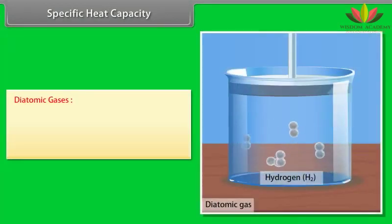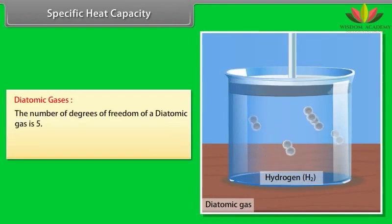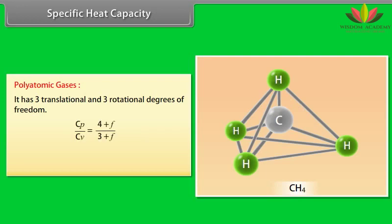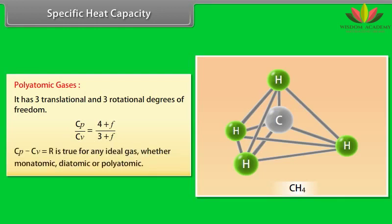Diatomic gases: The number of degrees of freedom of a diatomic gas is 5. CP by CV is equal to 9 by 7. Polyatomic gases: It has 3 translational and 3 rotational degrees of freedom. CP by CV is equal to 4 plus F upon 3 plus F. CP minus CV is equal to R is true for any ideal gas whether monoatomic, diatomic or polyatomic.